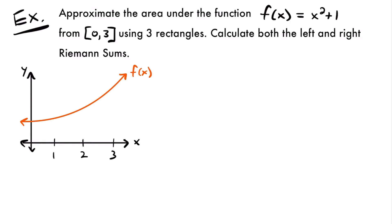Here we have a graph of our function f of x, which is x squared plus 1, and what we're going to do is approximate the area from 0 all the way over to 3 — we're looking to find the area of this shaded region. We want to do that using three rectangles in two different ways: the left and right Riemann sums, or using the left or right endpoints of your rectangles.